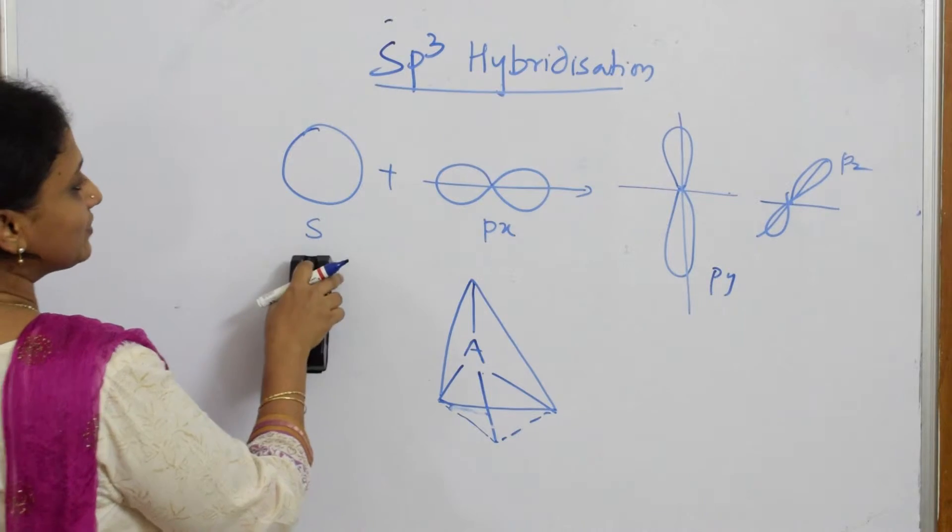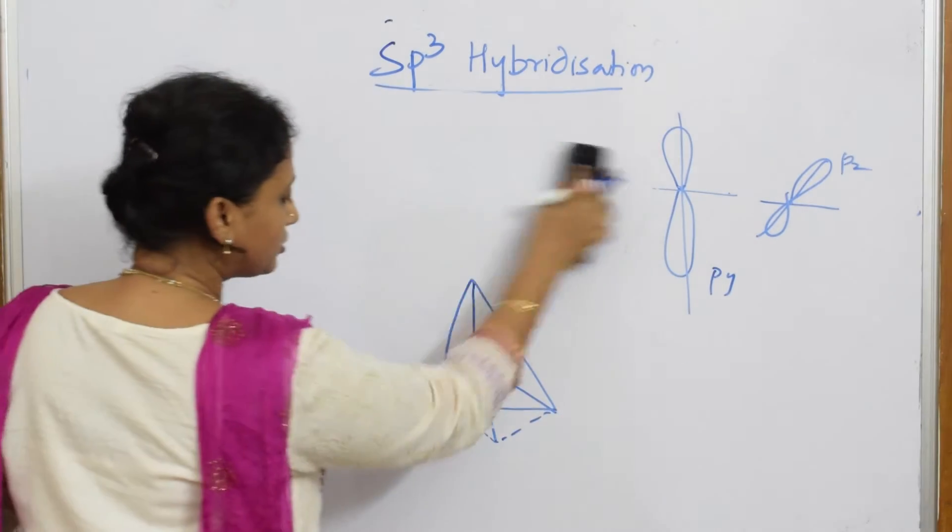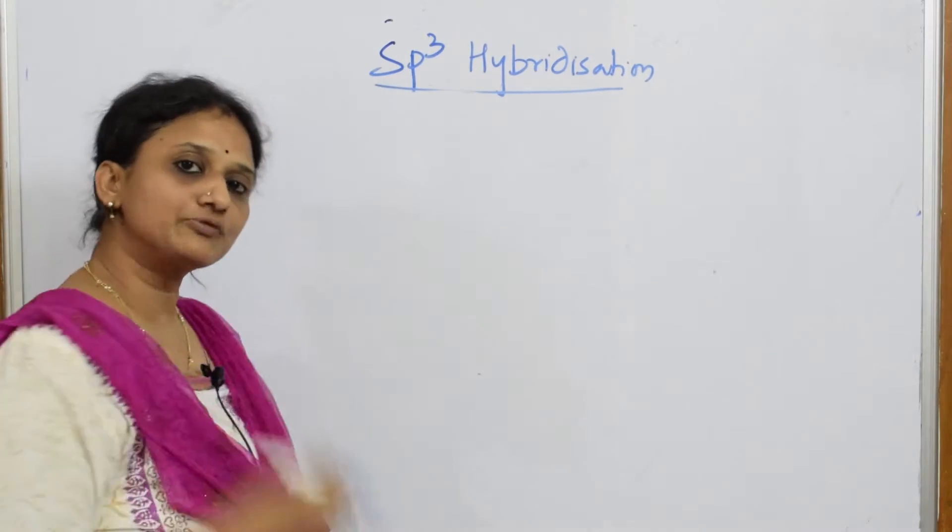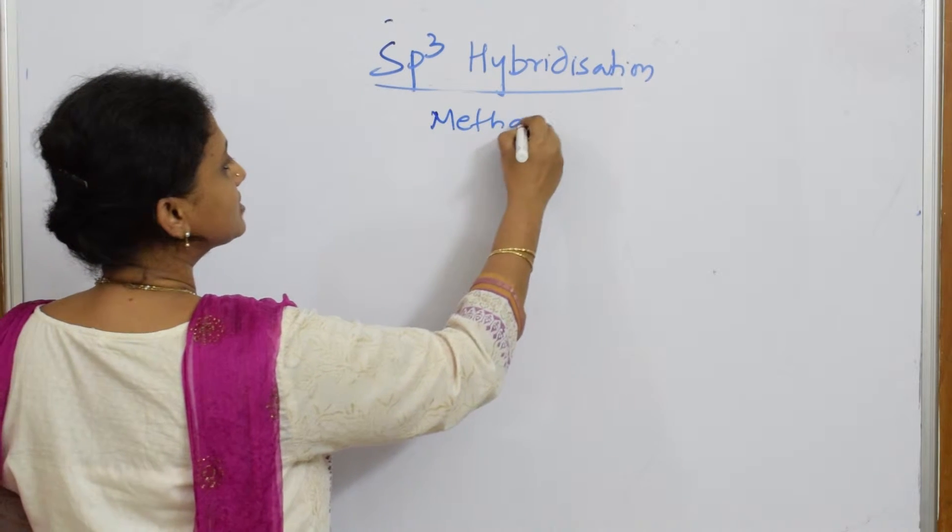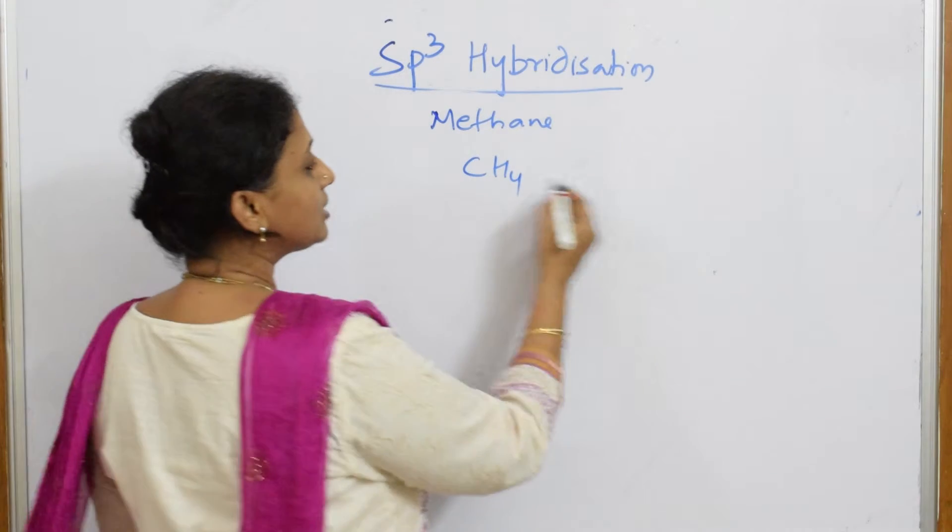So let us start. First let me pick up, as I said, 1S, PX, PY and PZ. So let me take an example for tetrahedral structure and show you. Basic example and most famous example is methane molecule. So methane is an example for tetrahedral structure. Methane, CH4, correct? Now write this structure.